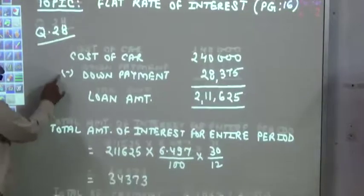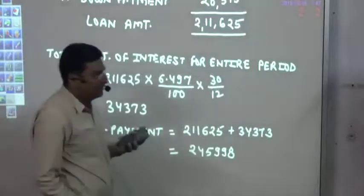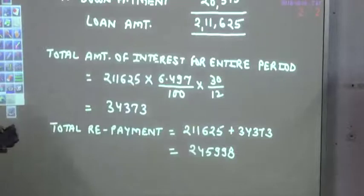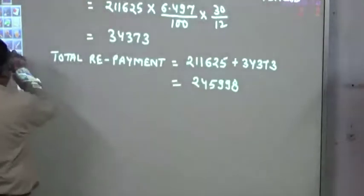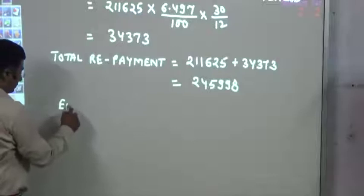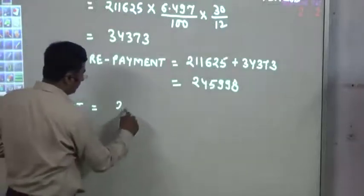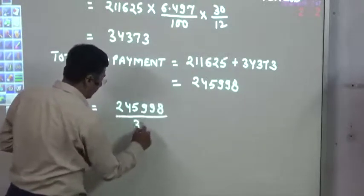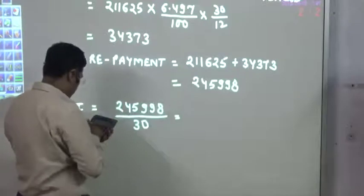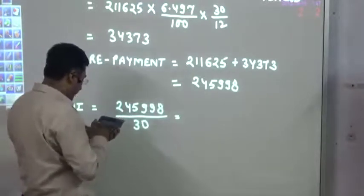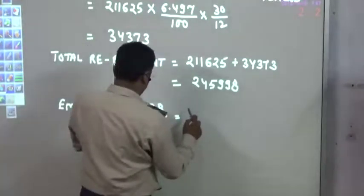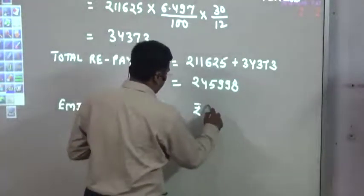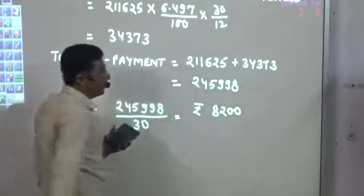The concept of flat rate simply means that a single rate applies for the entire period. Now this total amount has to be paid in 30 installments. So EMI equals 2,45,998 divided by 30. That gives an EMI of ₹8,200.